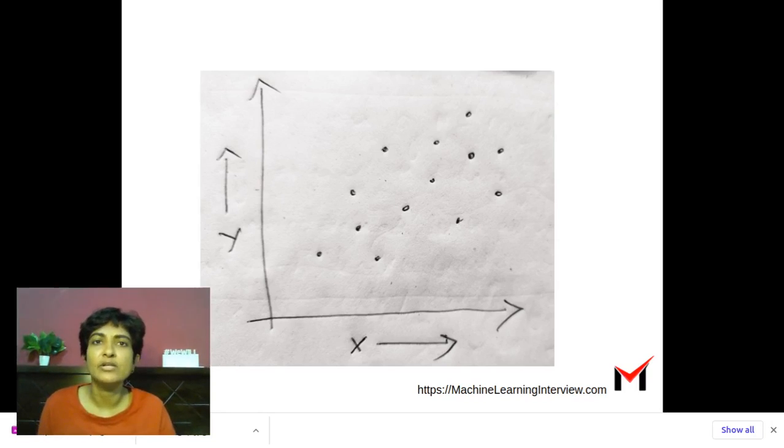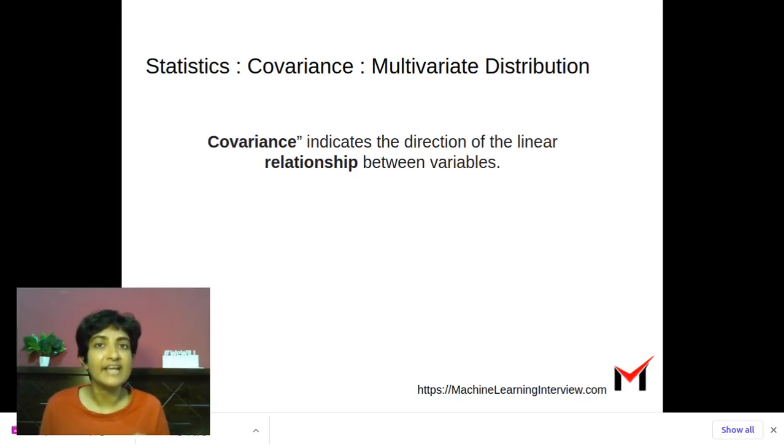So let's formally look at the notion of covariance first. Covariance indicates the direction of linear relationship between variables.